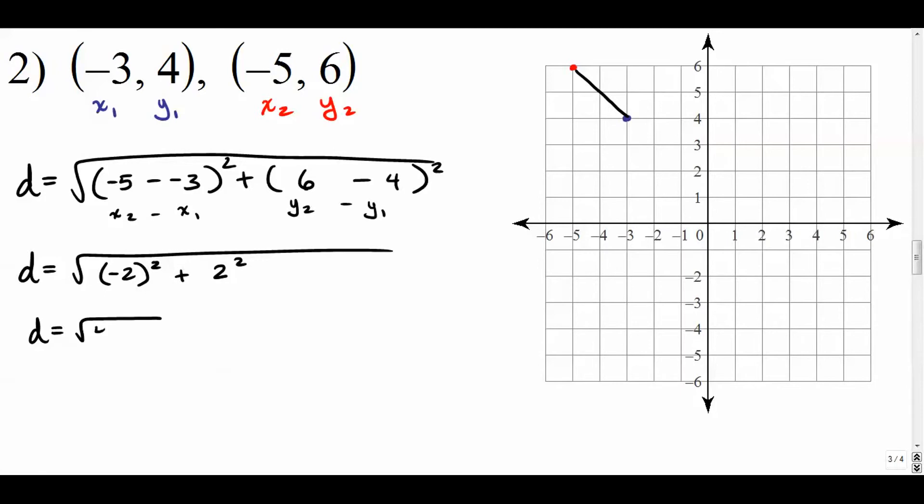To simplify, we get the square root of 4 plus 4, which is the square root of 8. The square root of 8 can be simplified down into the square root of 4 times 2, which can be separated into these two roots multiplied together. The square root of 4 is 2. Get rid of the square root sign and the radical 2 stays. So this distance is 2 radical 2. That's the most simplified exact version of it.